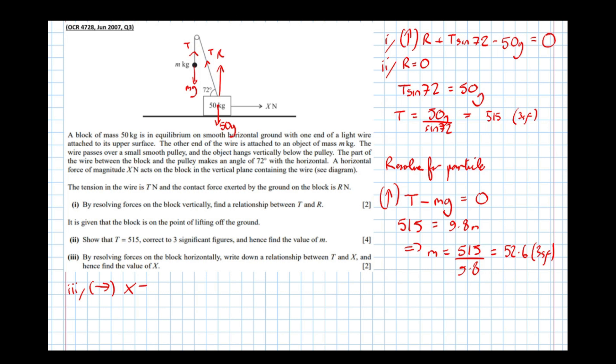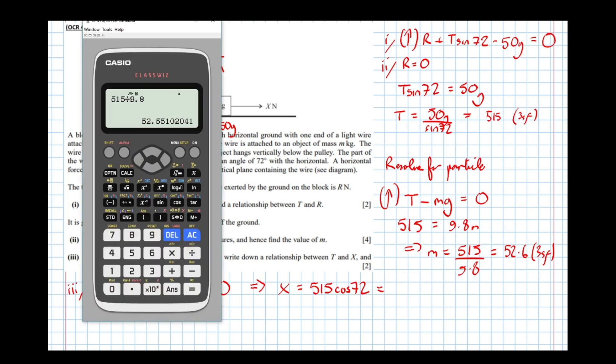So x take t cos 72 equals mass times acceleration, and it's not accelerating, so that's equal to zero. So this implies x equals t cos 72.